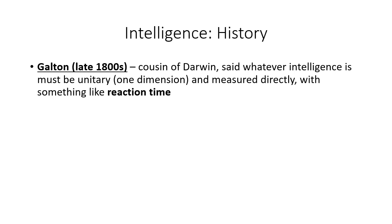First is Galton, who was actually a cousin of Darwin. He said whatever intelligence is, it must be unitary, one-dimensional, and able to be measured directly with something like reaction time. So he focused on reaction time in his early tests in the late 1800s — he actually measured intelligence based on reaction time. It might seem like an arbitrary measure, but we'll actually come back to that later.